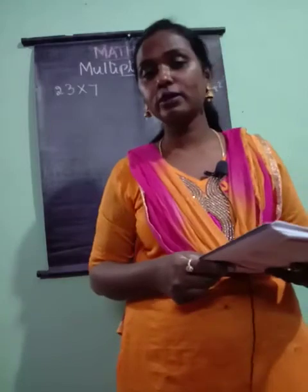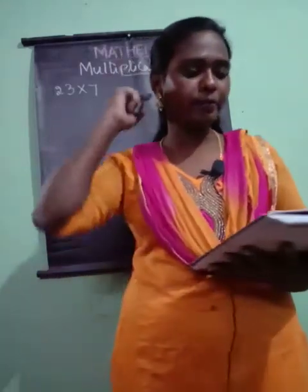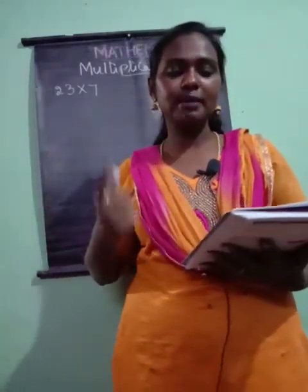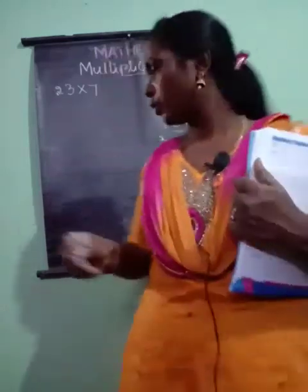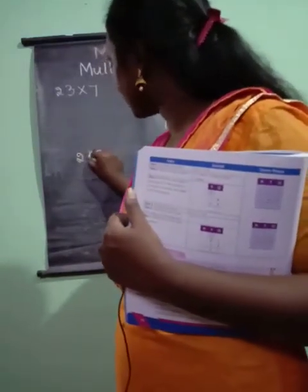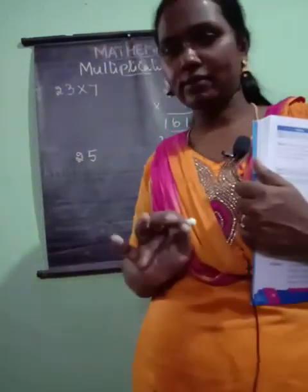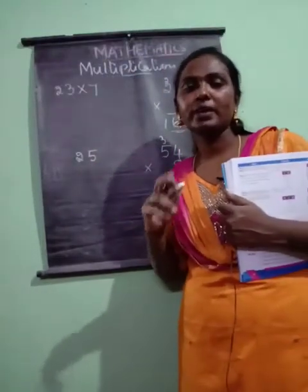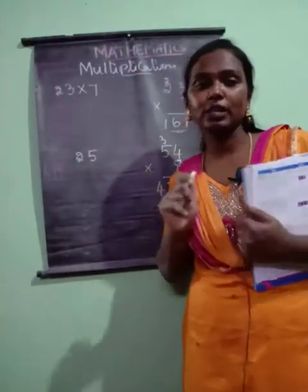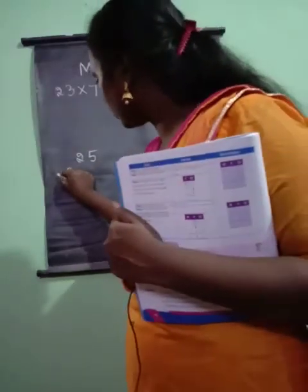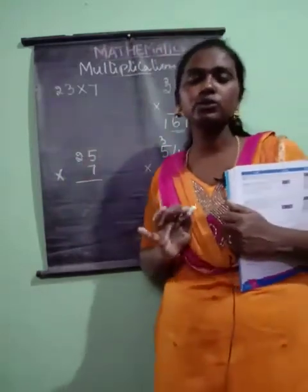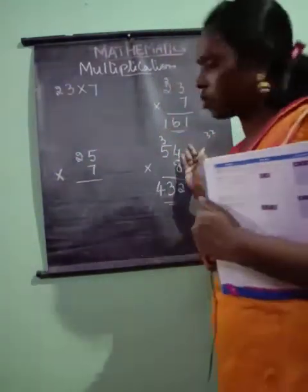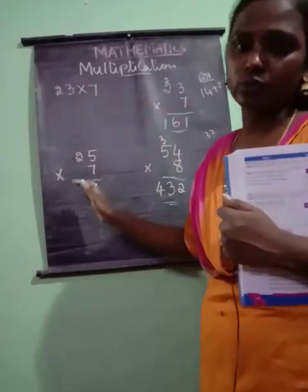The next sum: Manoj traveled some kilometers in a day. If he travels the same distance every day, how much distance does he travel in 25 days? He is traveling for 25 days, and per day he is traveling — so we calculate 25 into 7. We have to solve it the same way we solved the first word problem.